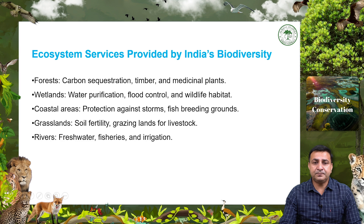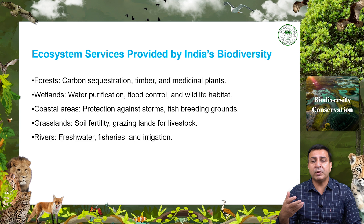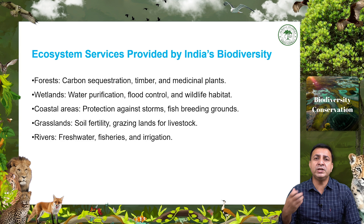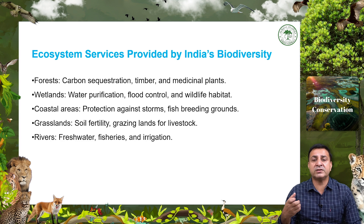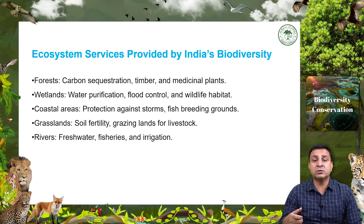Coastal areas provide protection from coastal erosion, breeding grounds for fish, and support for mangrove ecosystems that are crucial for human well-being. Grasslands help with soil fertility and livestock grazing, and are habitats for unique species like the blackbuck. Rivers provide a lot of ecosystem services including fresh water, sport fisheries, and essential services for agriculture. These services contribute to the Indian economy and the well-being of its people, especially those living in rural communities.